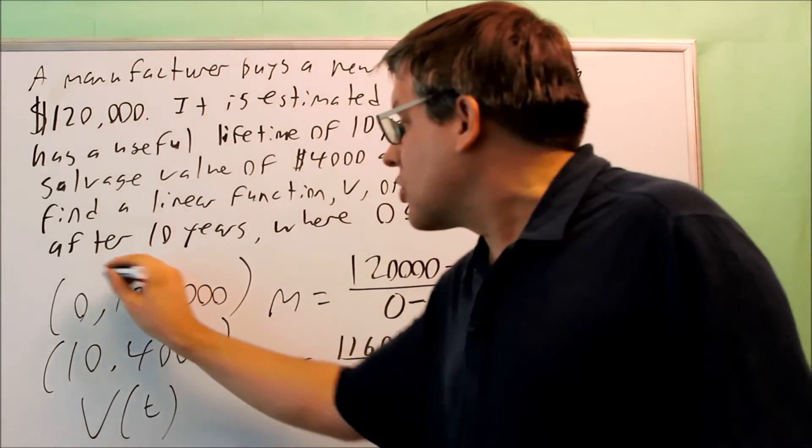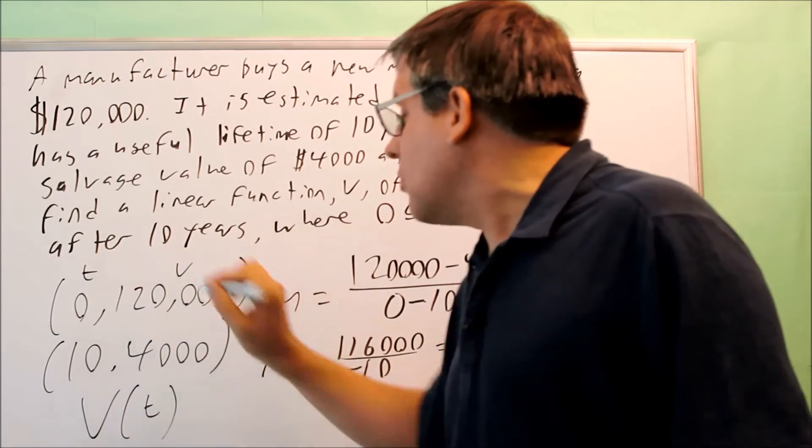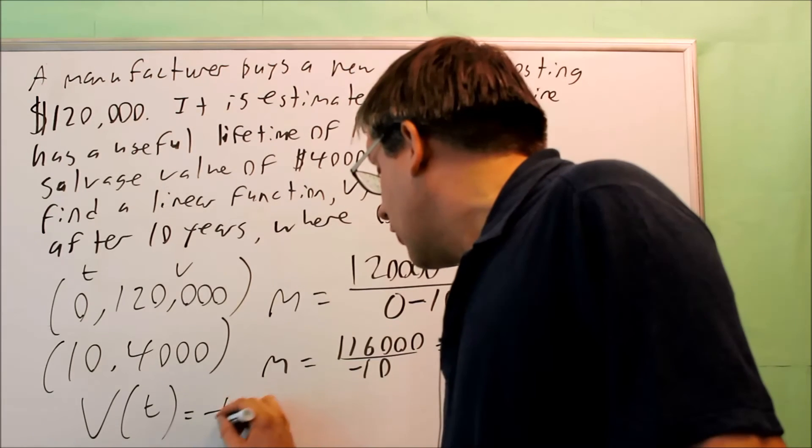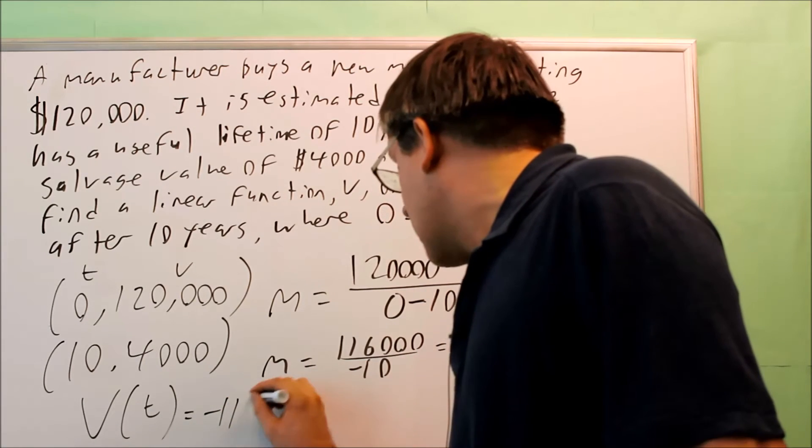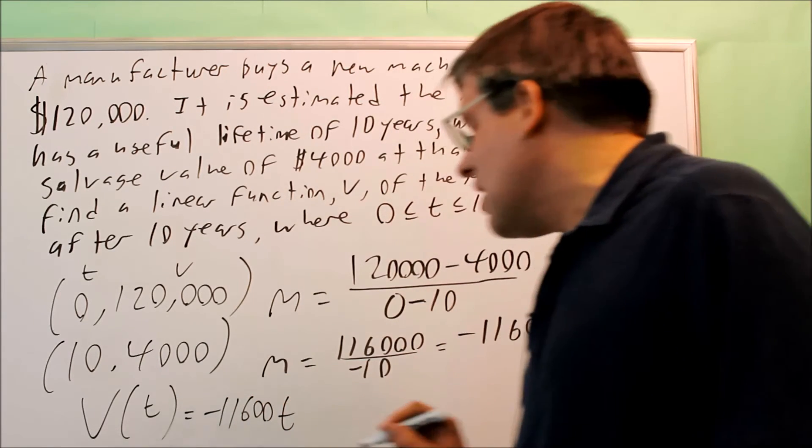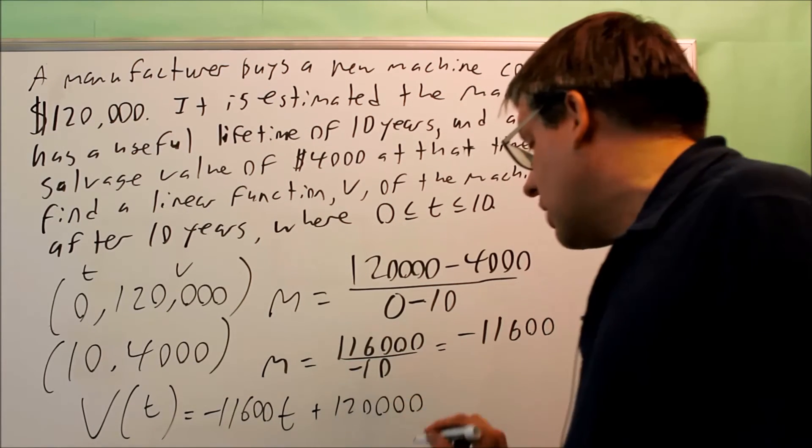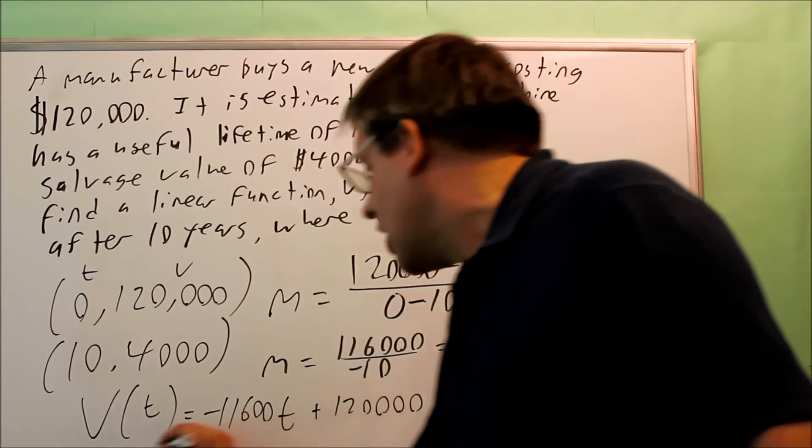That represents the number of years. So this is like your t, and this is going to be your V. That's going to be negative 11,600t. Put t in there instead of an x, and I have plus 120,000. That would be your y-intercept.